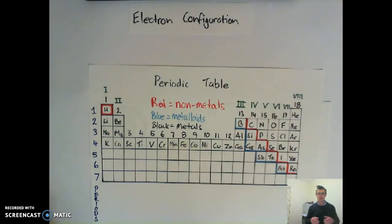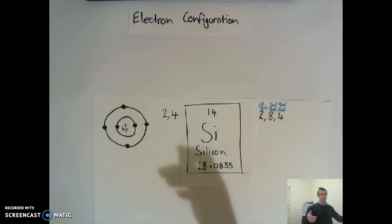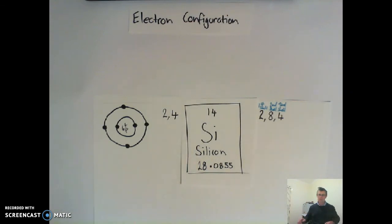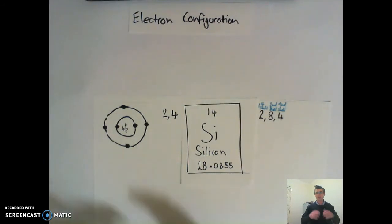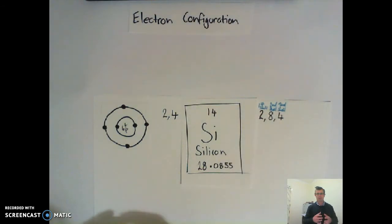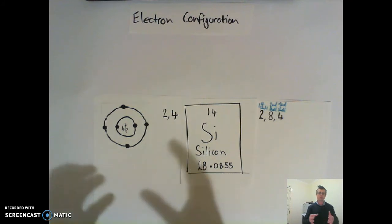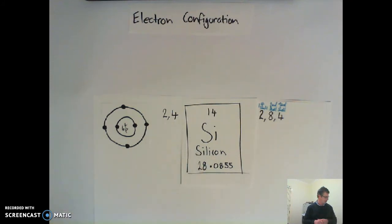You can tell where any element is on the periodic table by knowing its electron configuration. That's going to be really important when we start doing chemical formulas. These valence electrons are really important when we talk about chemical reactions — electrons are super important when we're talking about chemical reactions.